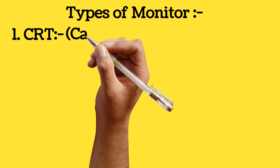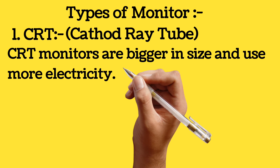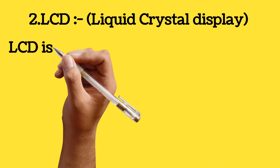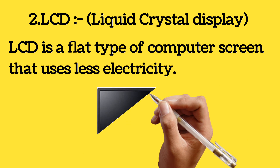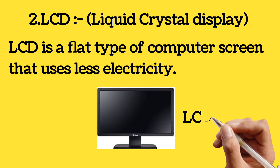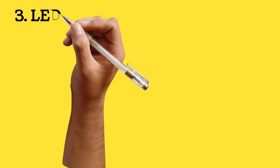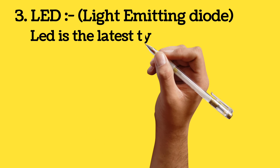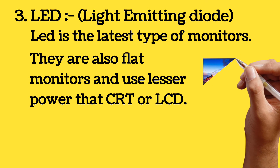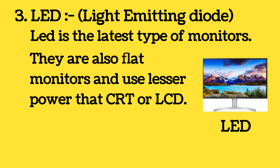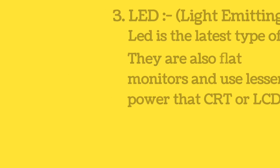Types of monitor. Number 1: CRT — Cathode Ray Tube. CRT monitors are bigger in size and use more electricity. Number 2: LCD, which uses less electricity than CRT. Number 3: LED — Light Emitting Diode. LED is better than CRT and LCD because it uses less electricity than both.